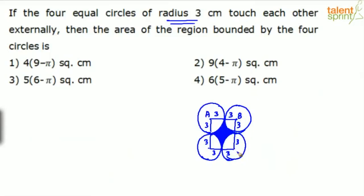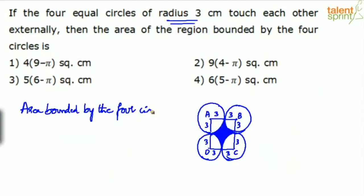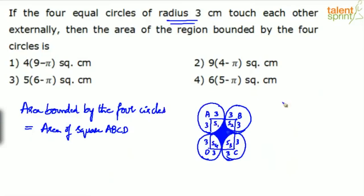If the centers are A, B, C, and D for the four circles, then the area bounded by the four circles equals the area of square ABCD minus the four sectors. From the total area of square ABCD, subtract sector one, sector two, sector three, and sector four.